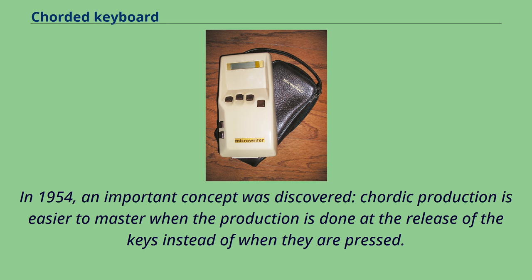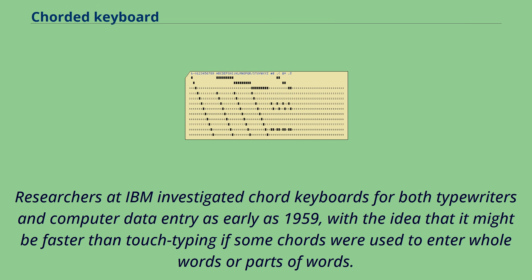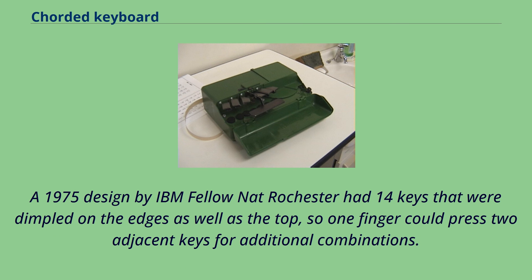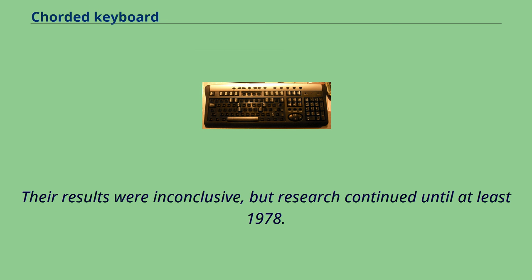In 1954, an important concept was discovered: chordic production is easier to master when the output is produced at the release of the keys instead of when they are pressed. Researchers at IBM investigated chord keyboards for both typewriters and computer data entry as early as 1959, with the idea that it might be faster than touch typing if some chords were used to enter whole words or parts of words. A 1975 design by IBM fellow Nat Rochester had 14 keys dimpled on the edges as well as the top, so one finger could press two adjacent keys for additional combinations. Their results were inconclusive, but research continued until at least 1978.